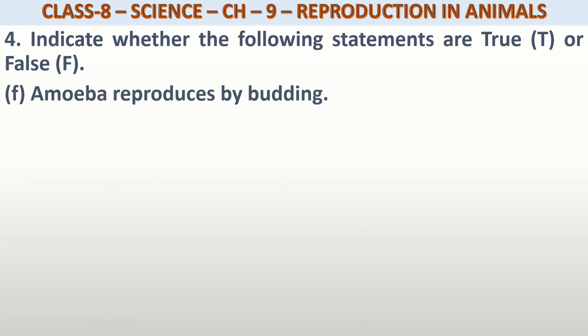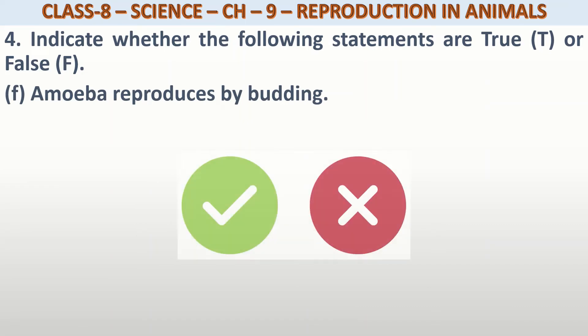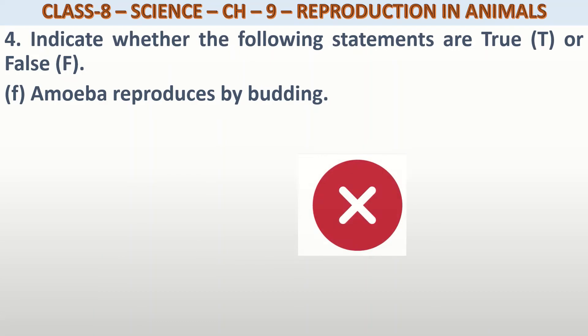Amoeba reproduces by budding. Amoeba जो है budding के through reproduce होता है? No, this is false. Amoeba कैसे reproduce होता है? That is by binary fission.